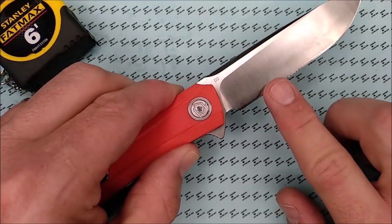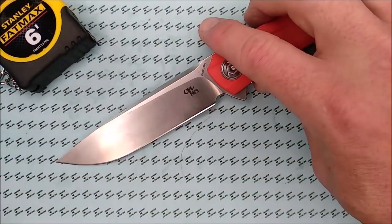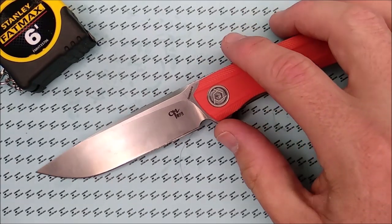So, basically, it's .7 difference from one side to the other. Not bad at all. And it's right around that 20-degree mark, which is beautiful.